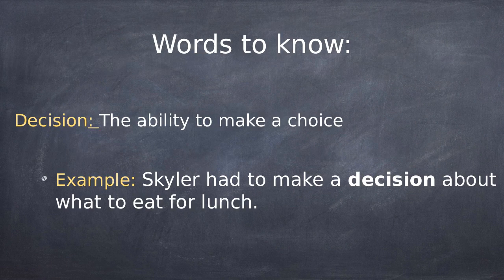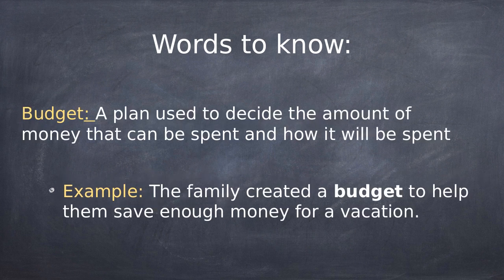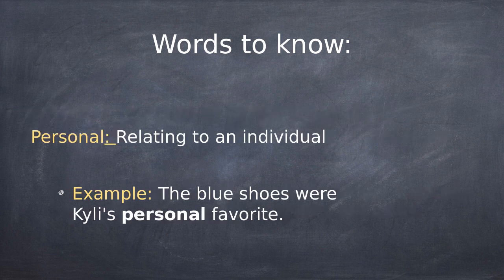So your vocabulary words: a decision is the ability to make a choice — pretty self-explanatory. A budget is a plan used to decide the amount of money that can be spent and how it will be spent. We'll get more into that as we go forward.